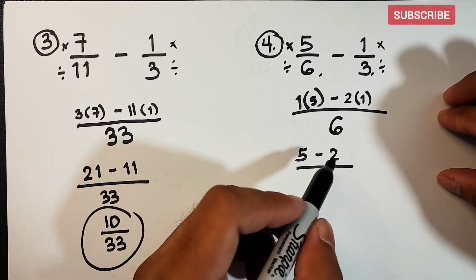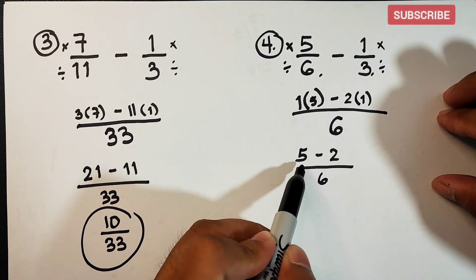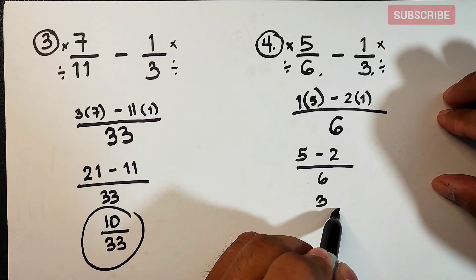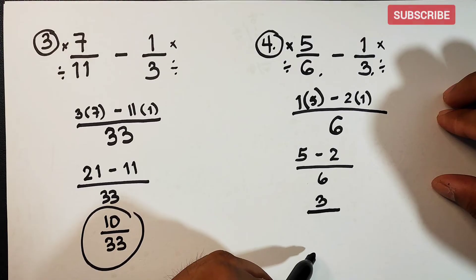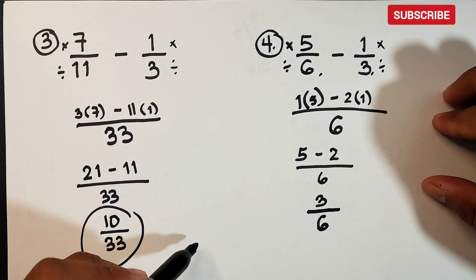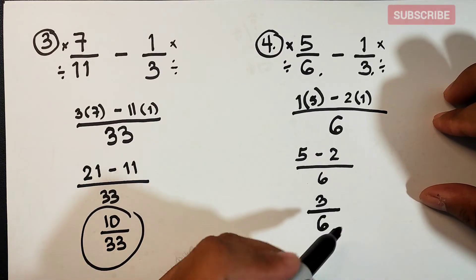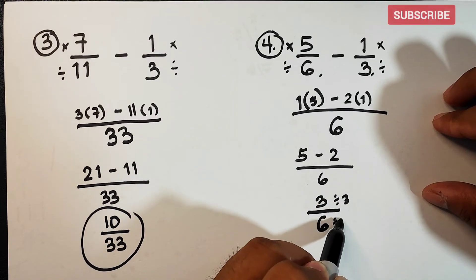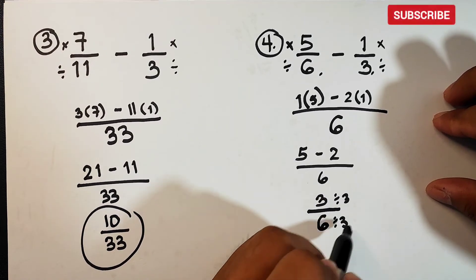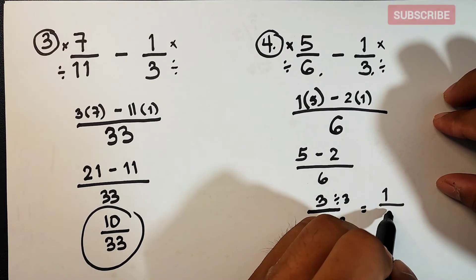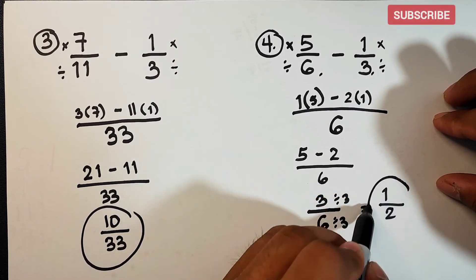So we have 5 minus 2, which equals 3 over 6. To simplify, we divide 3 by 3 and 6 by 3: 3 divided by 3 is 1, and 6 divided by 3 is 2. So the answer for number 4 is simply one half.